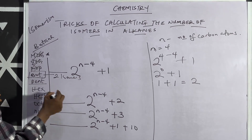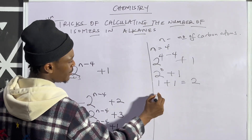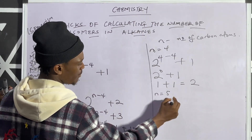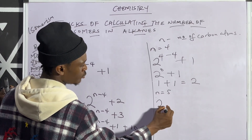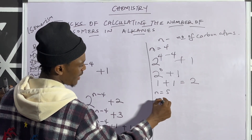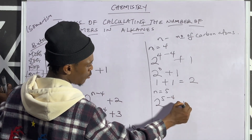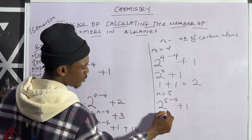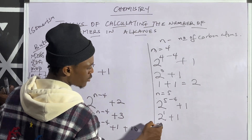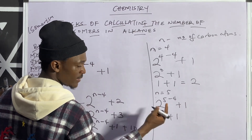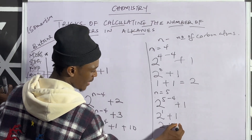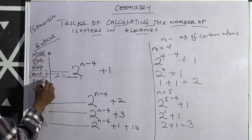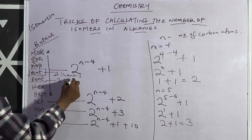What about pentane? For pentane, n = 5. Using the formula: 2^(5−4) + 1. Five minus four is one, so it becomes 2^1 + 1. Two to the power of one is 2, so 2 + 1 = 3. Pentane has 3 isomers.